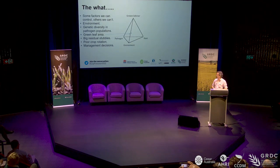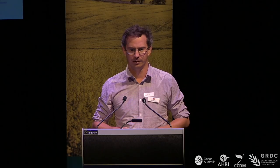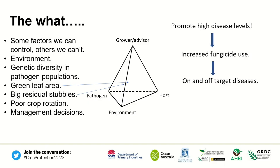The fourth point of this 3D disease triangle is the management decisions we make — this is the thing we can control the most. All these factors combined with ideal climatic conditions promote high disease levels. What do we do when we have high disease levels? We increase fungicide use. Repeated use of modes of action, using the same actives at high or low rates, can all lead to on and off-target disease, which can lead to the development of resistance.